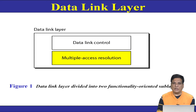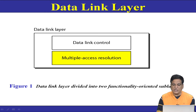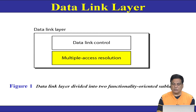In the data link layer, we have two sublayers. The first is the Data Link Control, also known as the Logical Link Control (LLC), which is concerned with flow control as well as error control. The second sublayer is known as Multiple Access Resolution, also known as the MAC layer. This layer is used for framing, addressing, and multiple access controls.